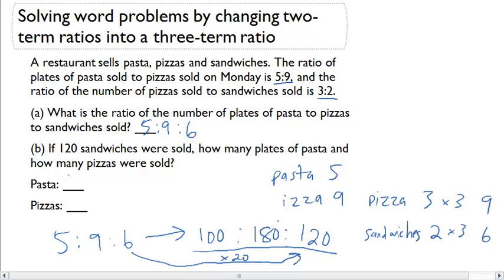Now I can fill in my pasta, which is going to be the first term of my ratio, 100. And my pizzas, the second term of my ratio, 180.